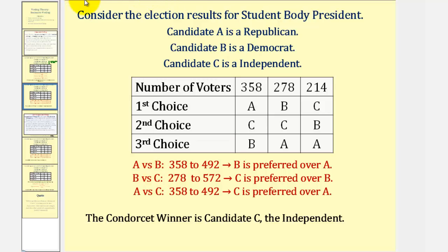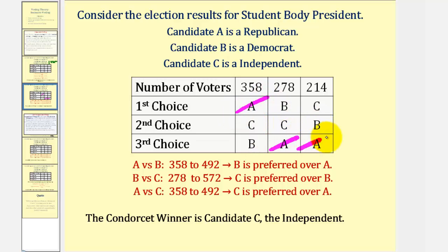For A versus B, we eliminate C. Notice how A would win in the first column, but B wins in the other columns, so A versus B is 358 to 492, and B is preferred over A. Then for B versus C, we eliminate A. Notice B wins only in one column, C wins in the other two, so B versus C is 278 to 572, and C is preferred over B.